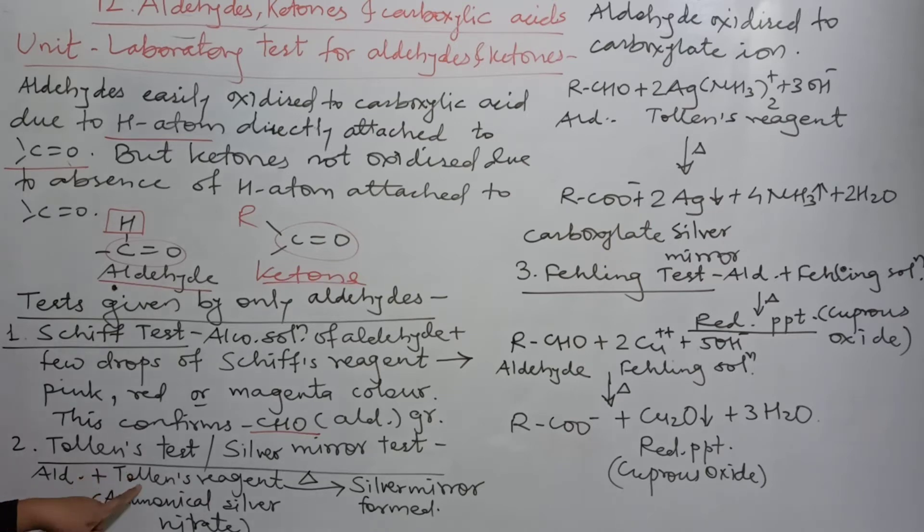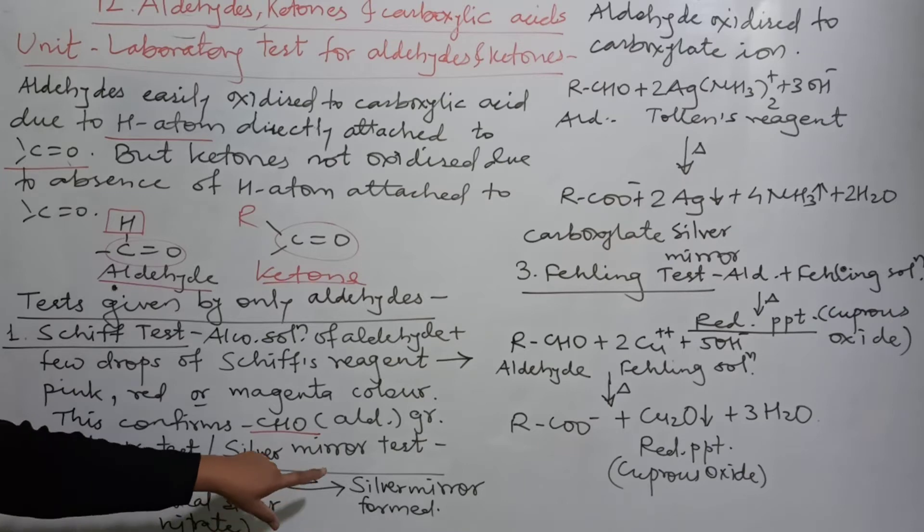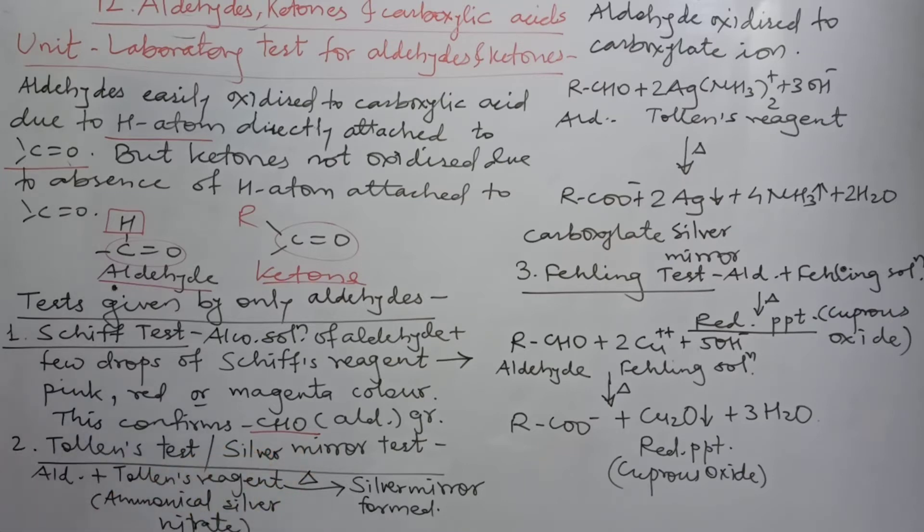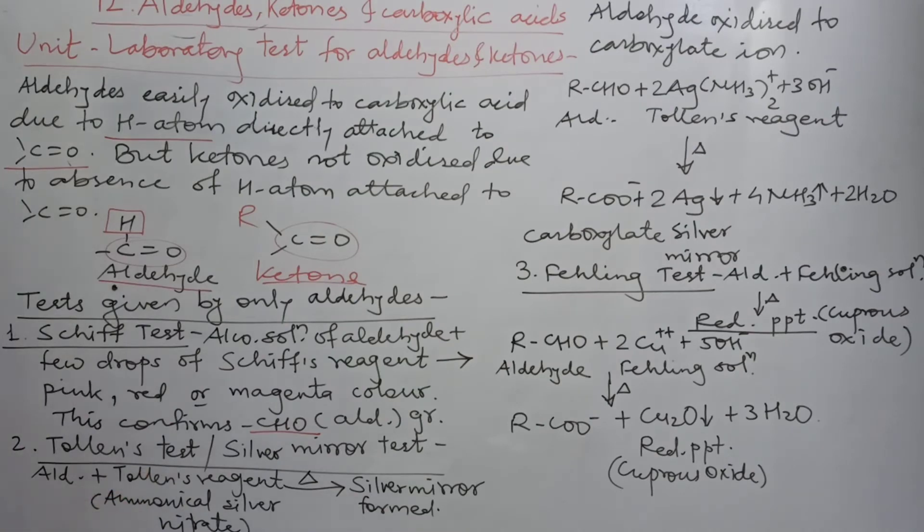Here aldehyde plus Tollen's reagent and boiling is necessary. Only after boiling, this test is observed and a silver mirror is formed. What is Tollen's reagent? It is the ammoniacal silver nitrate. Silver nitrate, which is compound AgNO3, is dissolved in ammonia. So there is a solution called Tollen's reagent, ammoniacal silver nitrate, and it is called Tollen's reagent.